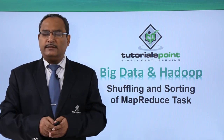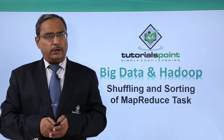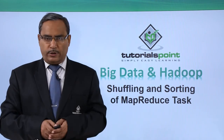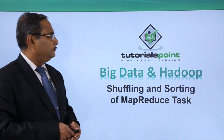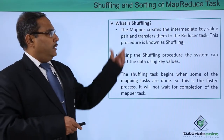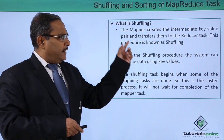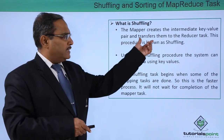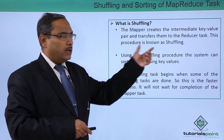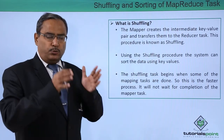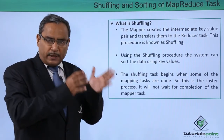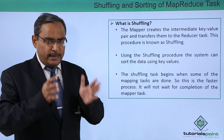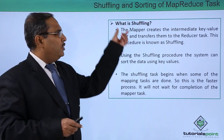In this video, we are discussing shuffling and sorting of MapReduce tasks. The mapper creates the intermediate key-value pairs and transfers them to the reducer task. We know that the mapper's output will be going to the reducer, and the intermediate step is known as shuffling.